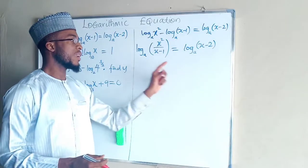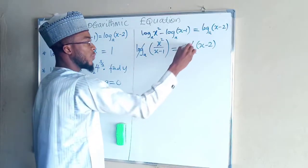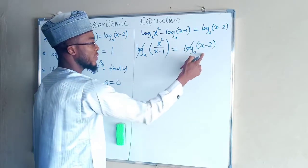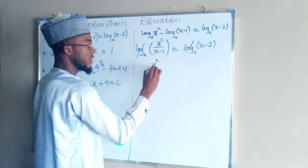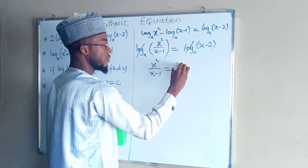The left and right hand side all have equal log, so log cancels log. We end up having this equals this: x squared over x minus 1 equals x minus 2.